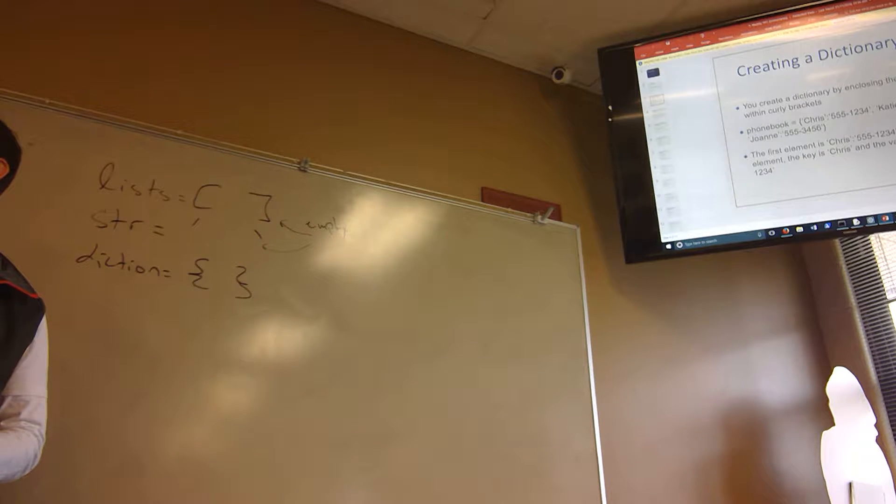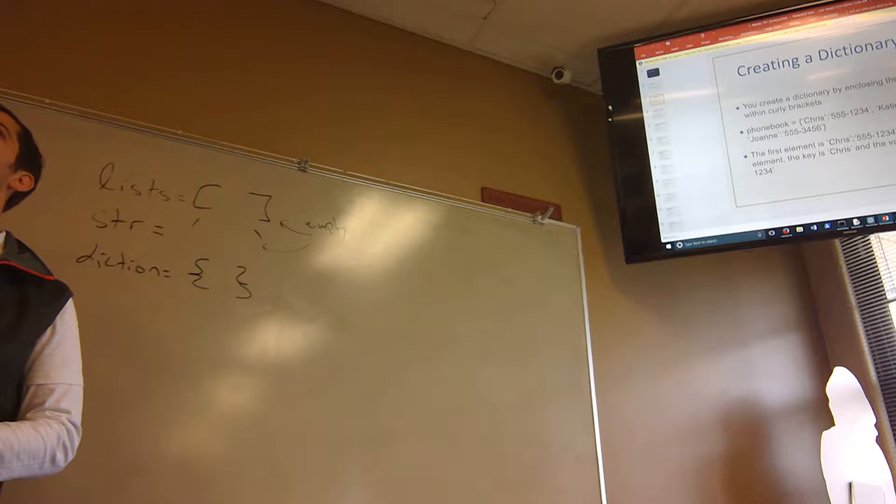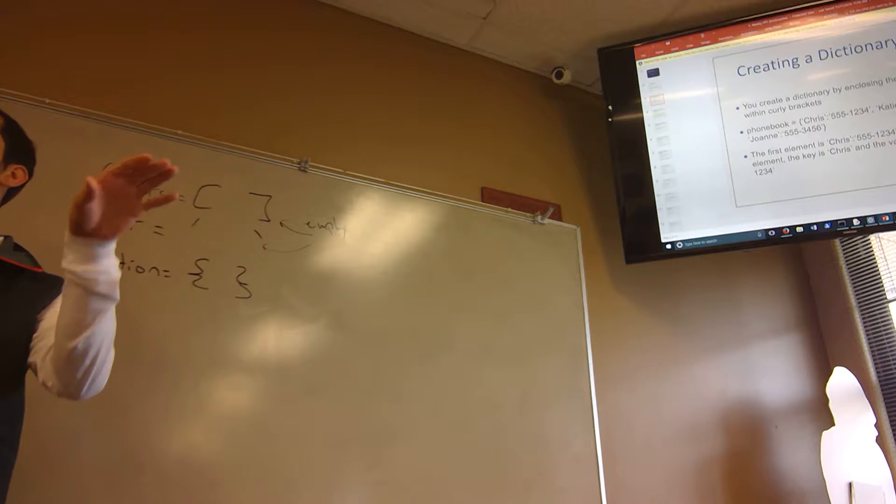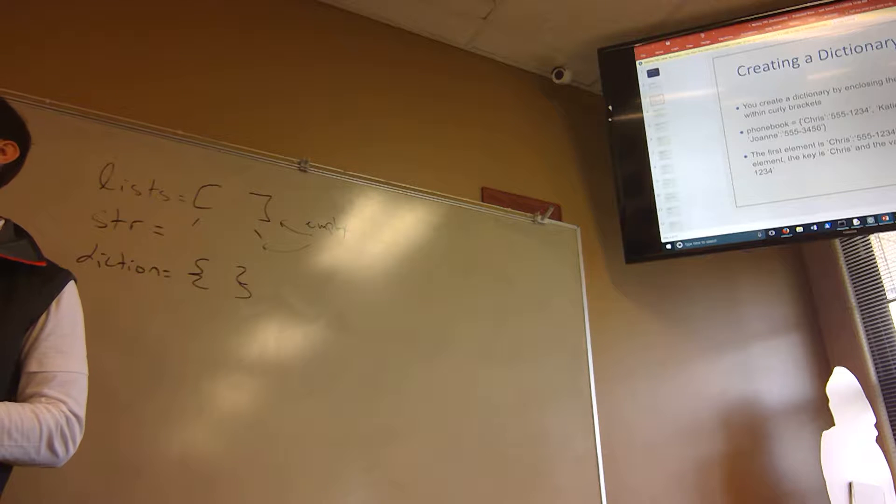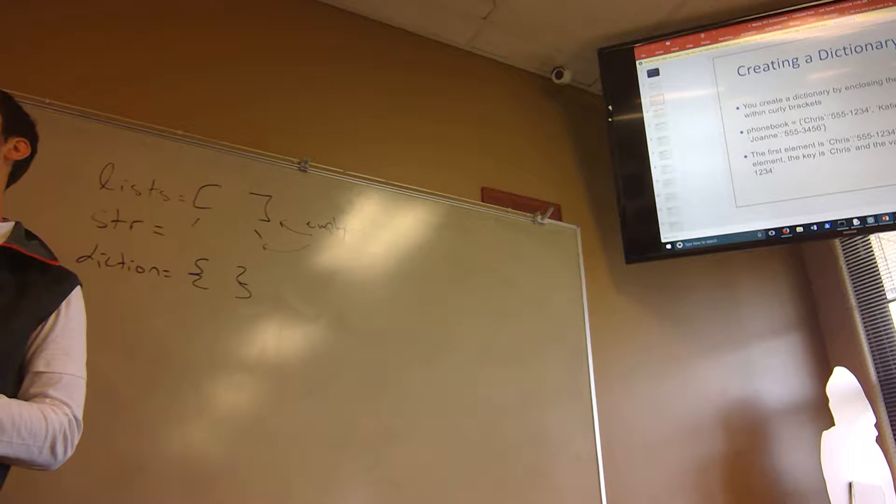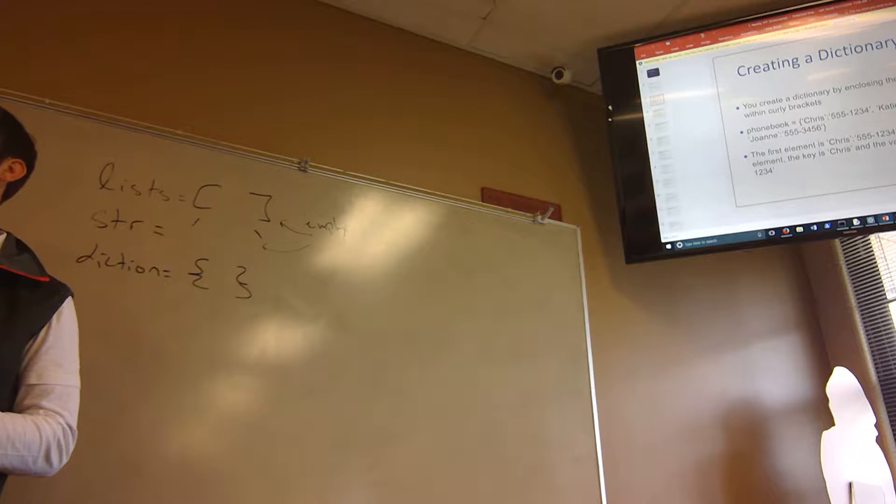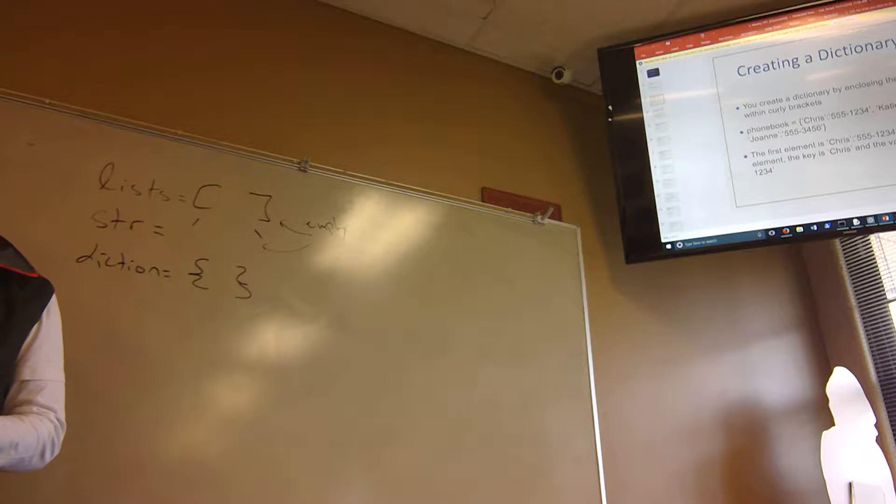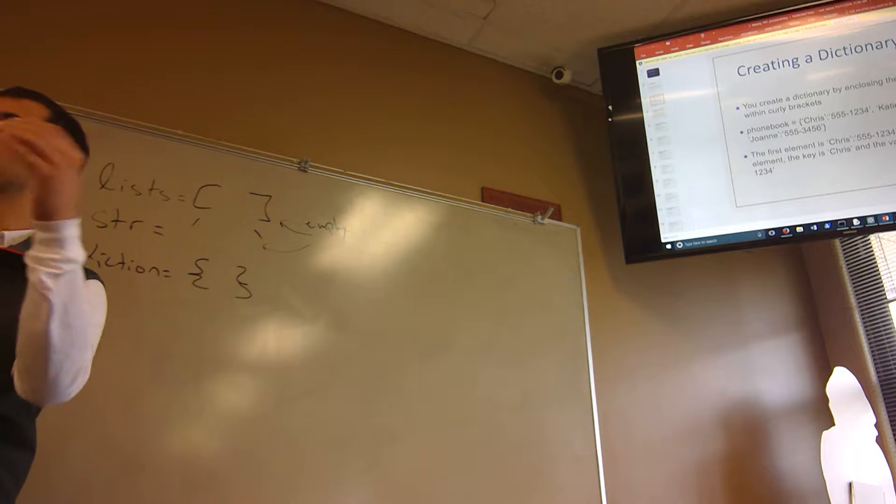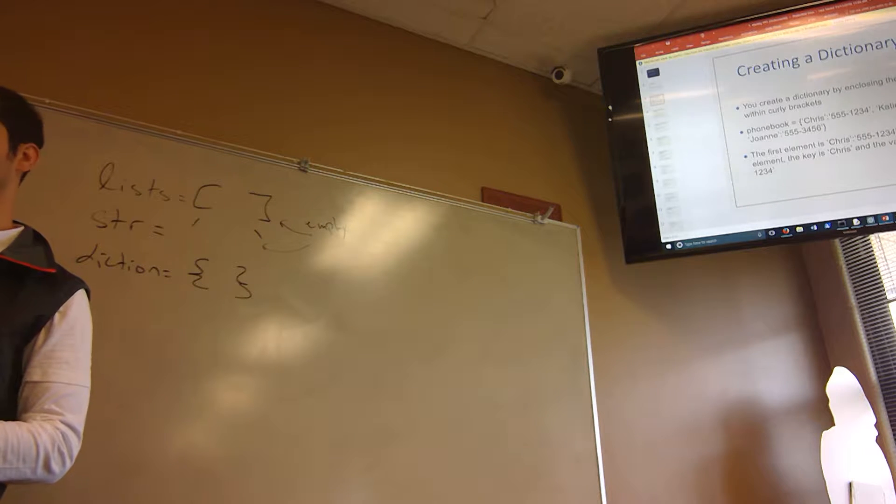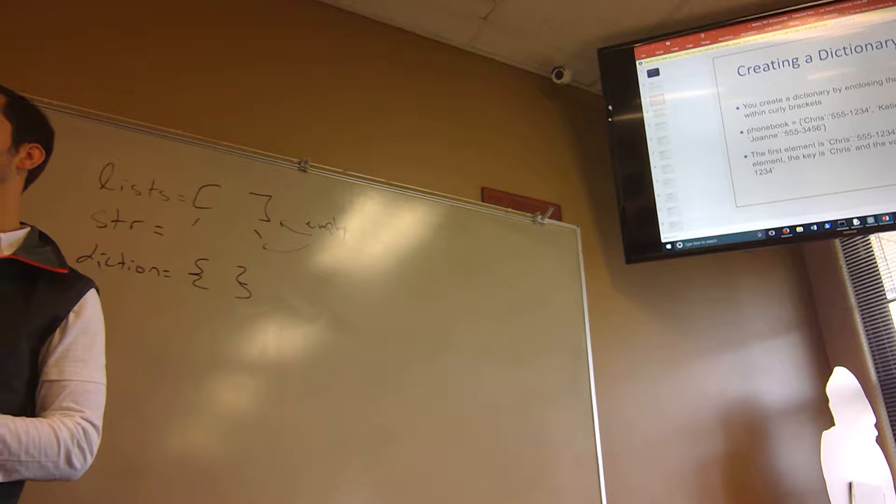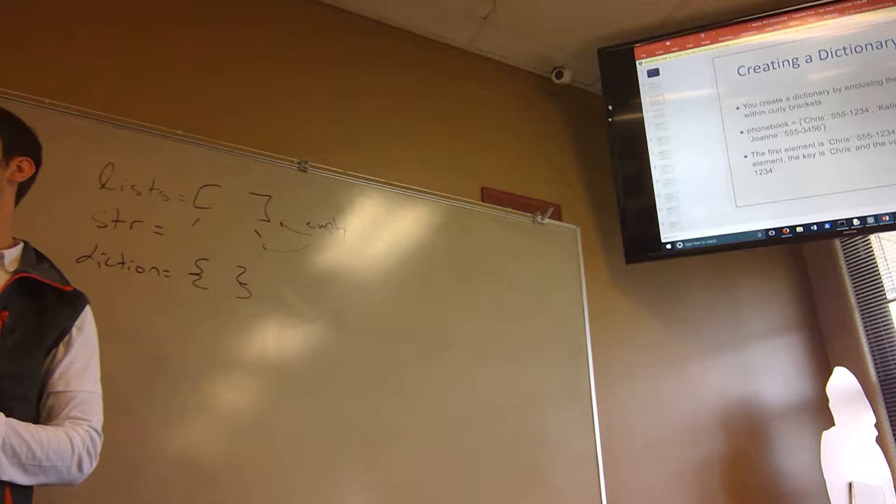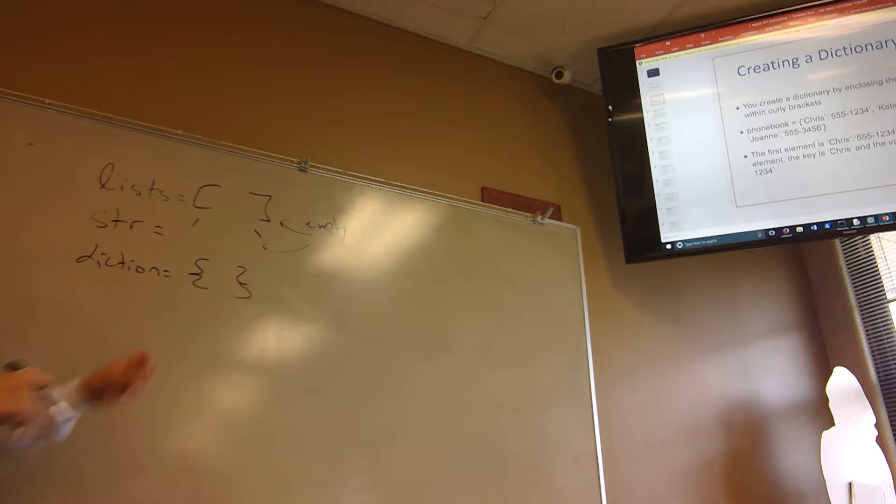Student: When you print a list it still has the brackets. Is it the same with the dictionary? Yes. If you're printing it in the shell, you also get the quotation marks around strings. When you print the dictionary as a whole it will, just to kind of let people know that this is a dictionary. This is an empty dictionary.